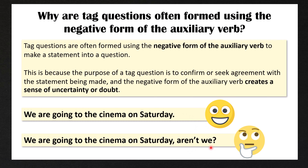However, if we make this into a tag question — 'We're going to the cinema on Saturday, aren't we?' — having the auxiliary verb in the negative form creates that sense of certainty or doubt because it contrasts the statement. Now let's say you don't think you're going on Saturday, you could also write this tag question as 'We aren't going to the cinema on Saturday, are we?'